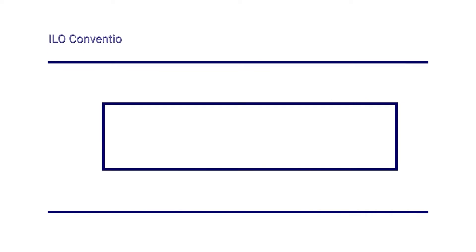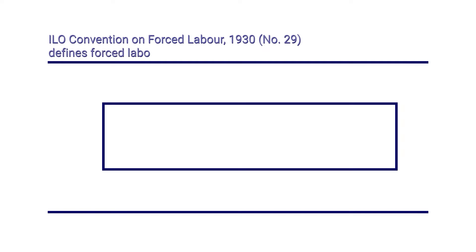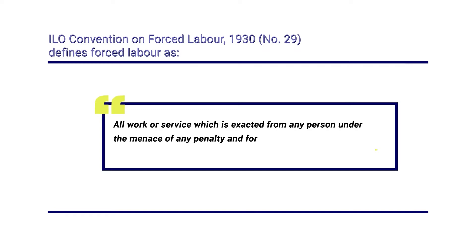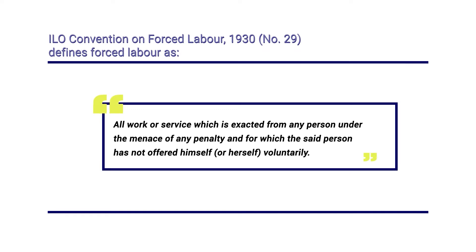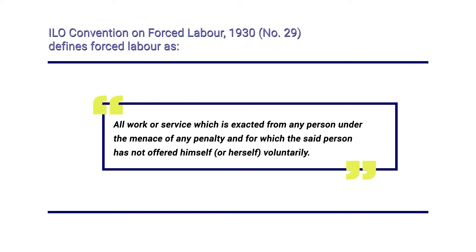The ILO Convention on Forced Labor, 1930, No. 29, defines forced labor as all work or service which is exacted from any person under the menace of any penalty and for which the said person has not offered himself or herself voluntarily.